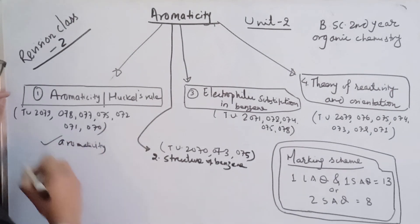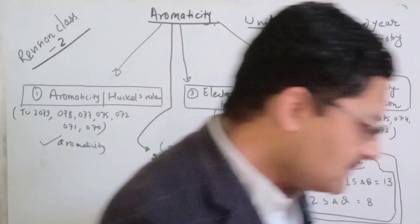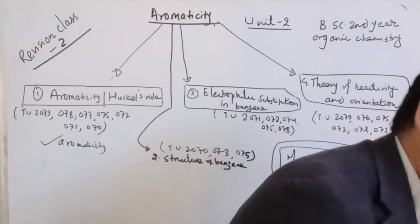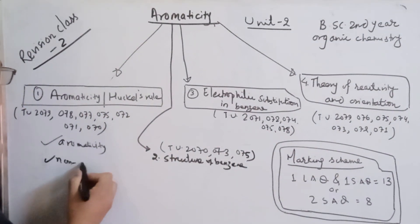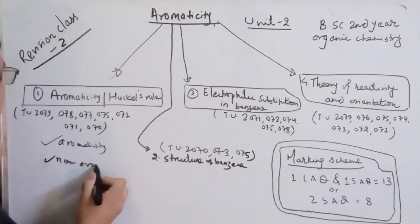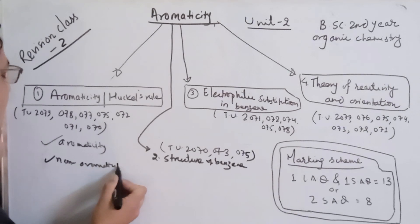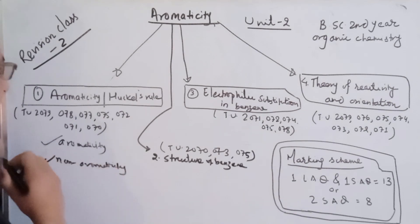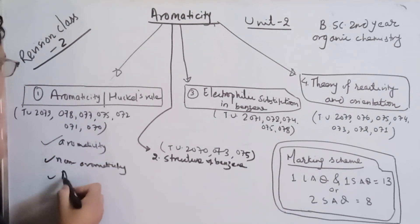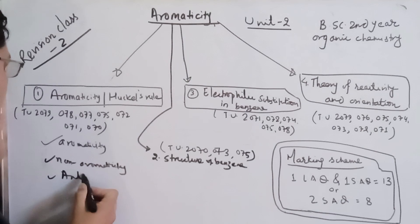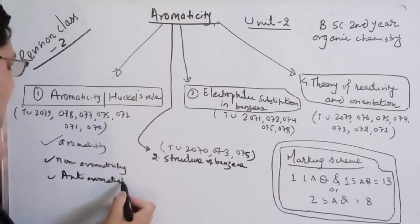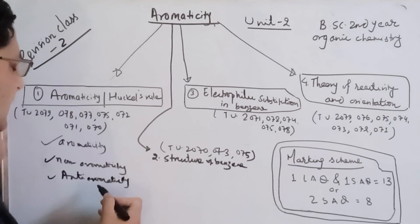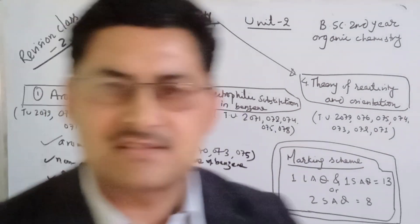What is aromaticity? Define aromaticity. What is non-aromaticity? A non-aromatic type of compound is anti-aromatic. Anti-aromatic compound exhibits anti-aromaticity. Anti-aromaticity follows a 4N system.